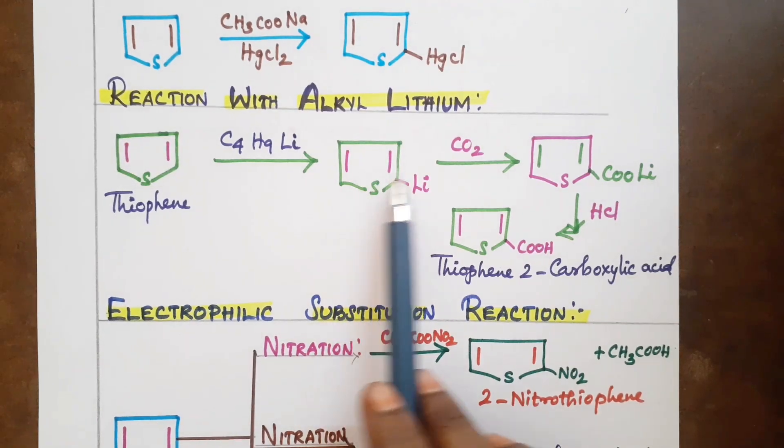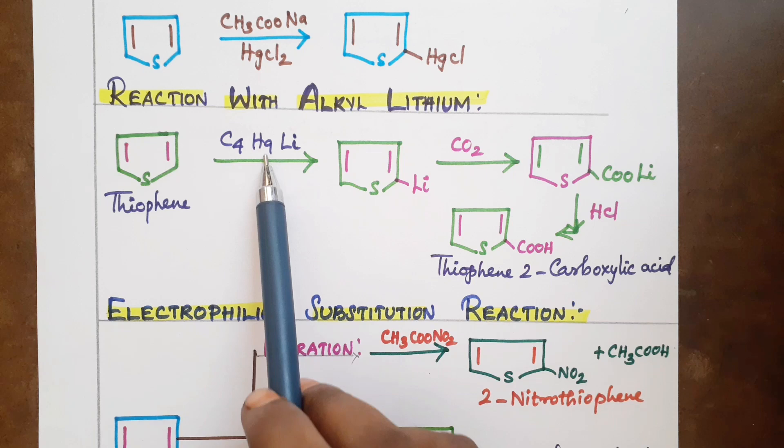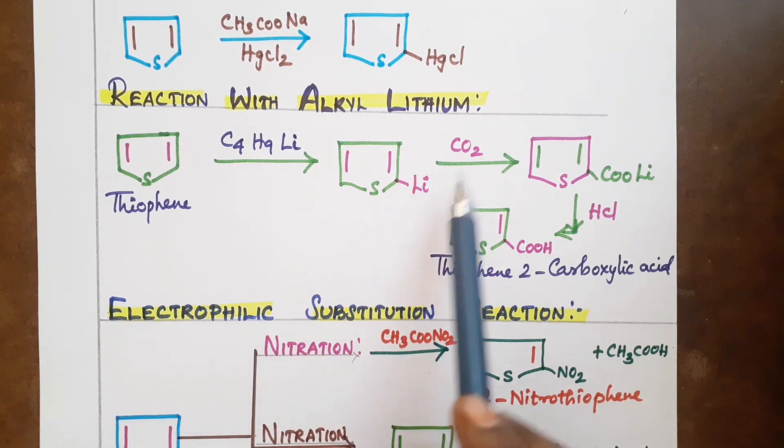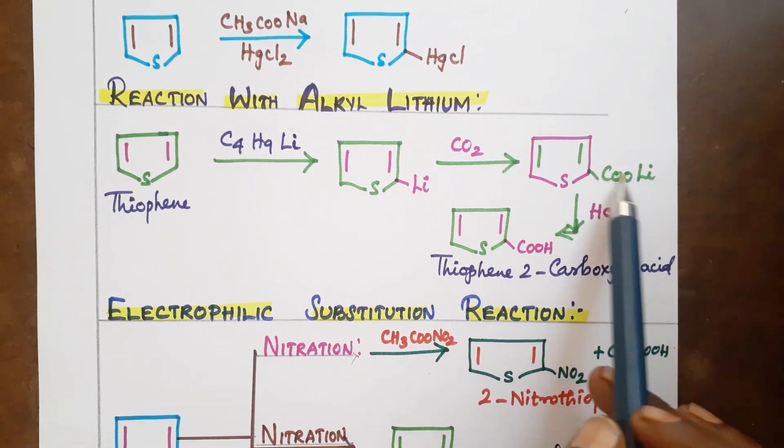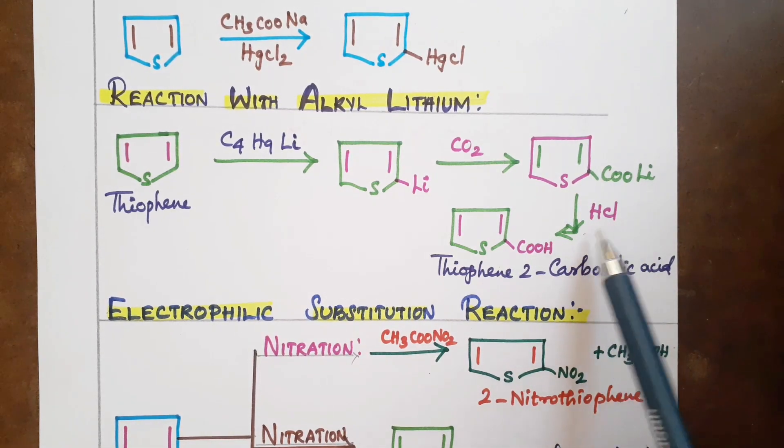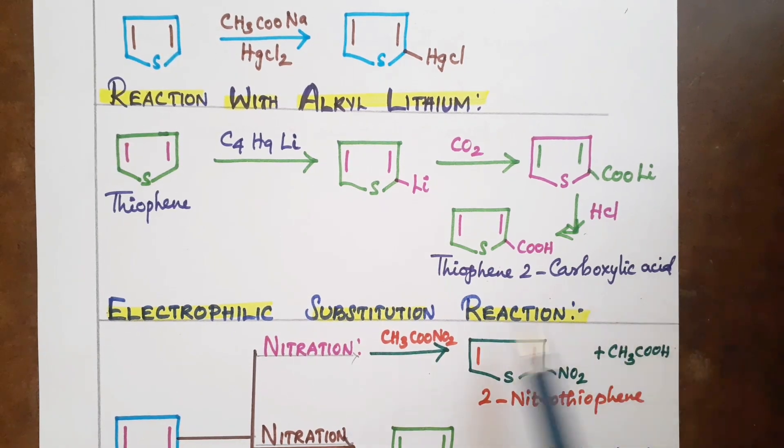Next reaction is with alkyl lithium. Butyl lithium is the alkyl group. Lithium causes the substitution and reacts with CO2 group. This is a reaction with alkyl lithium.